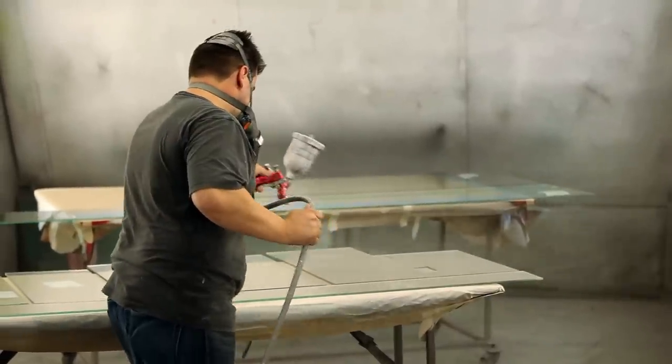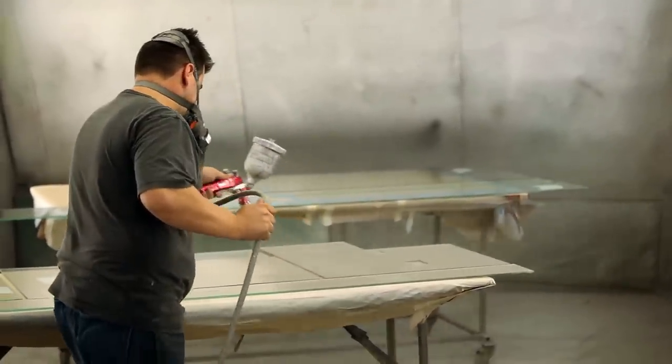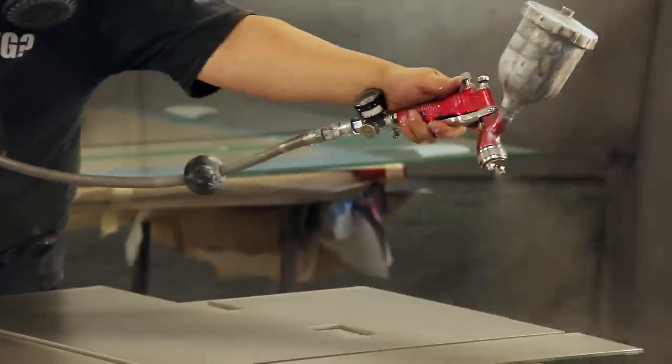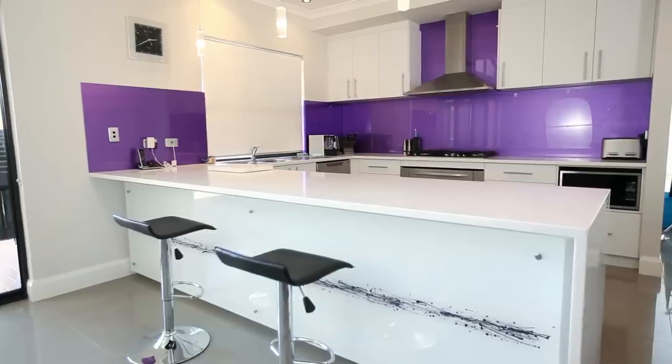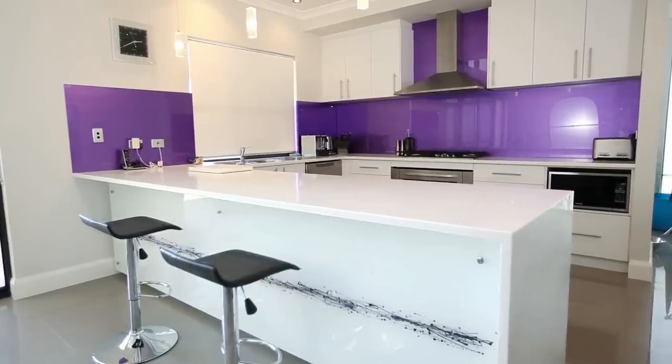The paint actually comes with a 10-year warranty on it, so it's quality paint that we use. We don't go out the back and paint it with car paint. We actually use a quality paint that will last as long as your kitchen does. It won't crack, peel, or fade.